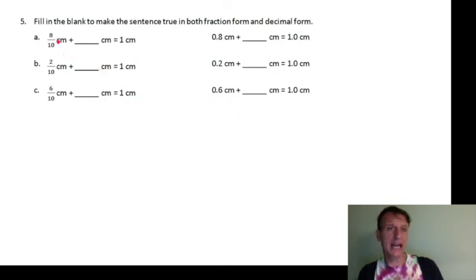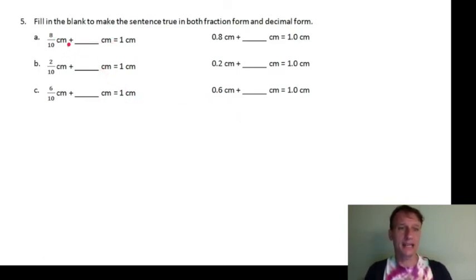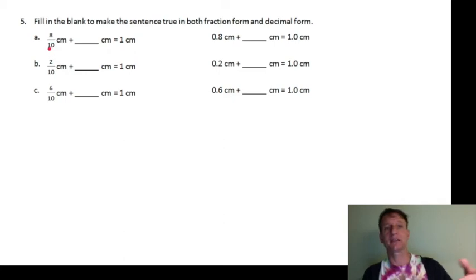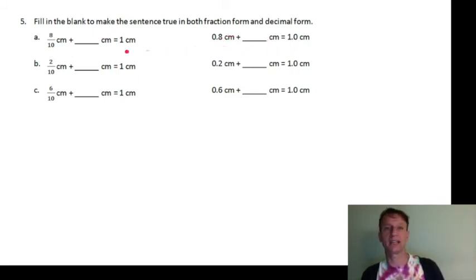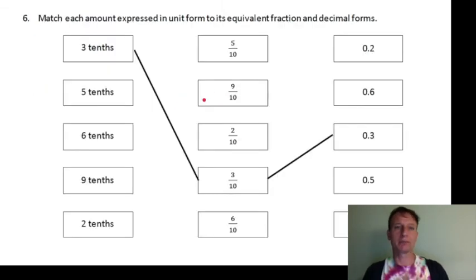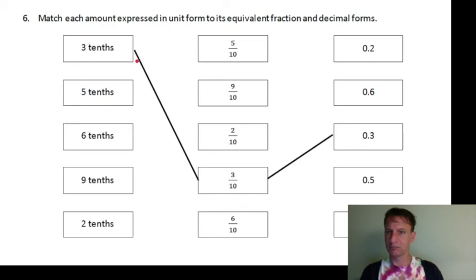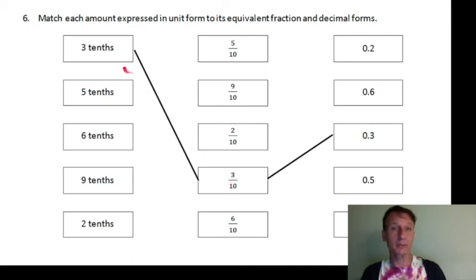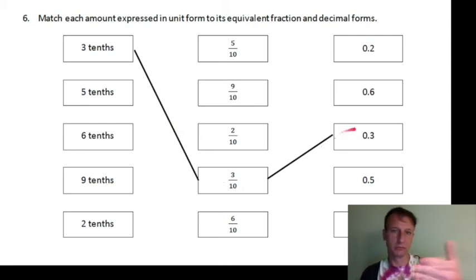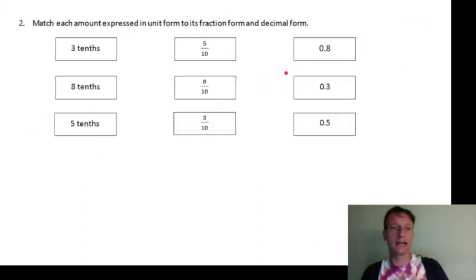Here you're doing addition and subtraction. Notice that the fraction and decimal versions are read exactly the same way — 'eight tenths centimeter plus what equals one centimeter' — you read them identically in both forms. Fill in the missing part. Then there's a matching section that's very straightforward: three tenths in unit form, three tenths as a fraction, three tenths as a decimal — they've done the first one for you, finish the rest.